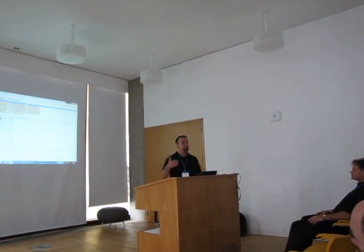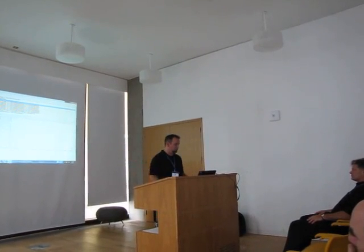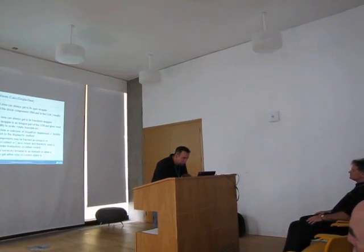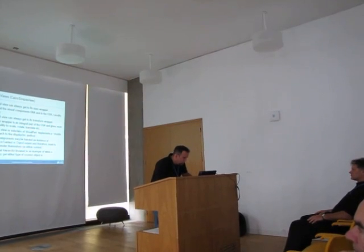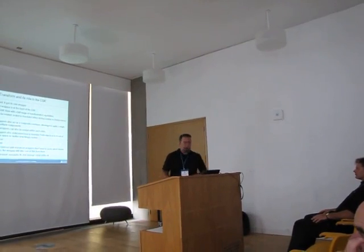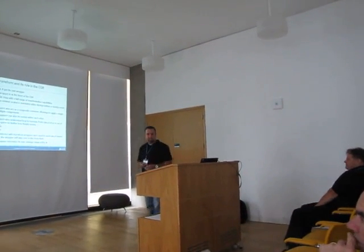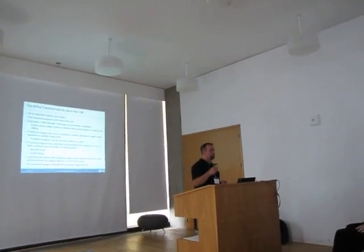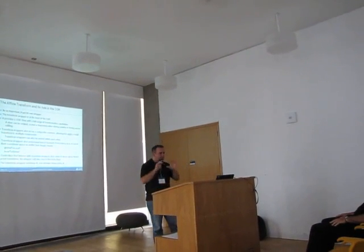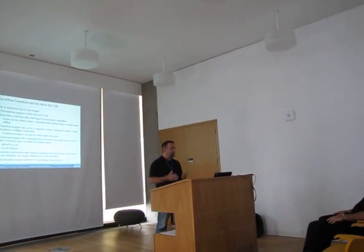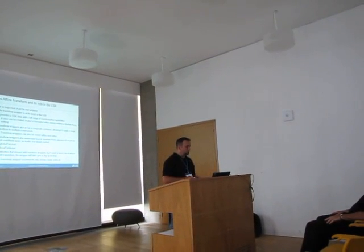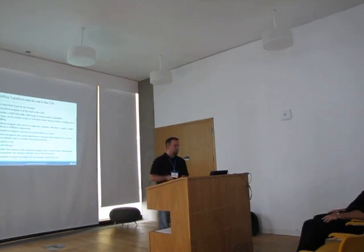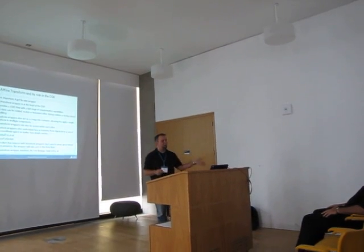I talked about this thing called the transform wrapper. I think that the affine transform is probably one of the most important things in this Cairo Graphics Kit. It was the thing that we tried to figure out how we were going to manage so that other people knew how to use this Cairo kit, and it was so important that it got its own wrapper — called the transform wrapper. It is what provides the CGK basic view with the full range of transformation capabilities.